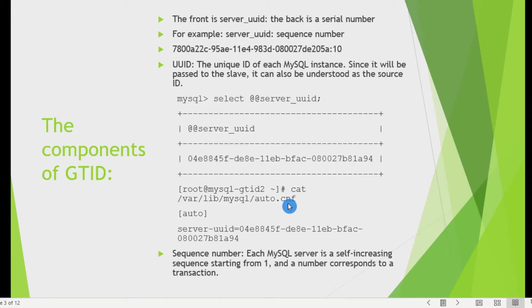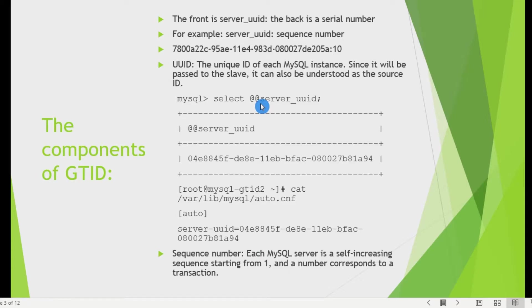If you have cloned a MySQL server virtual machine, both instances will share the same auto.cnf and therefore the same server UUID. To fix this, delete the auto.cnf file and restart MySQL — it will automatically generate a new auto.cnf with a different UUID.